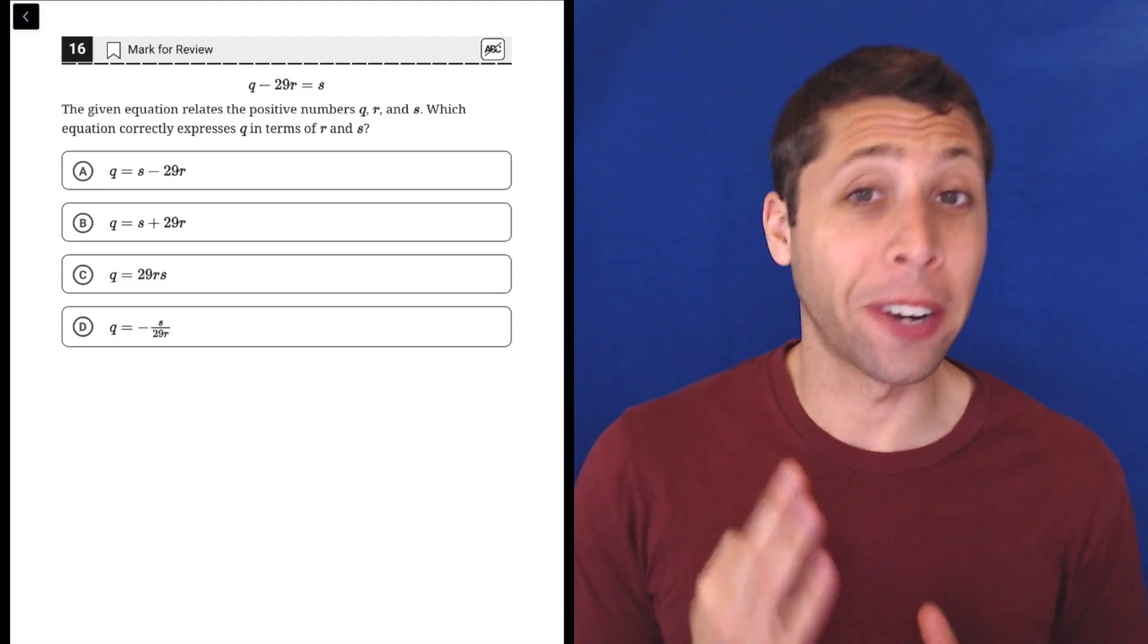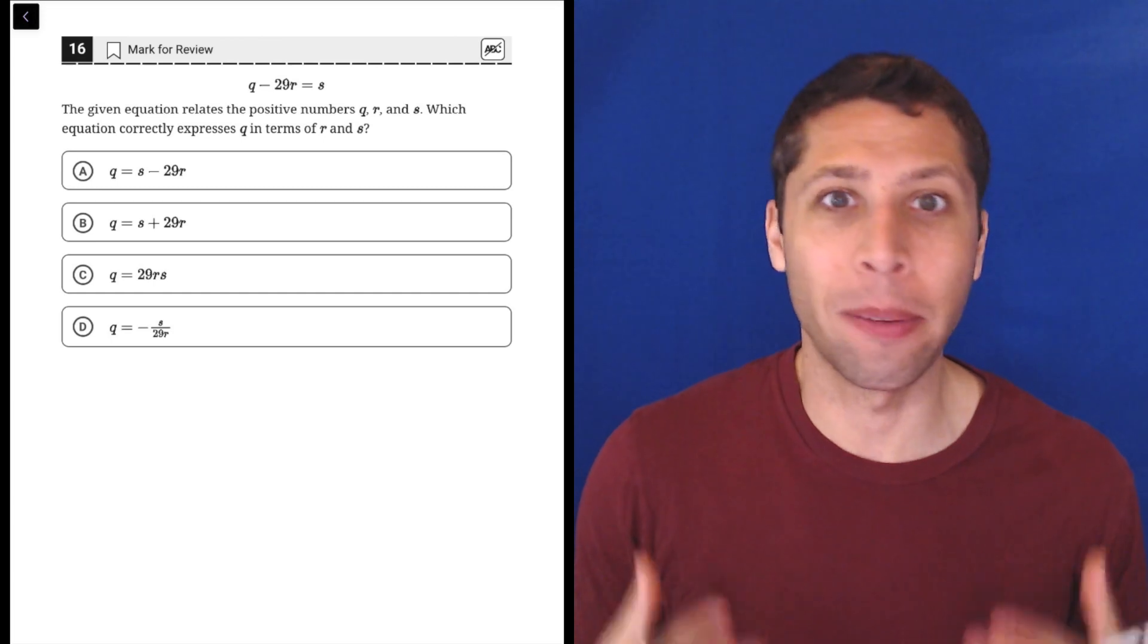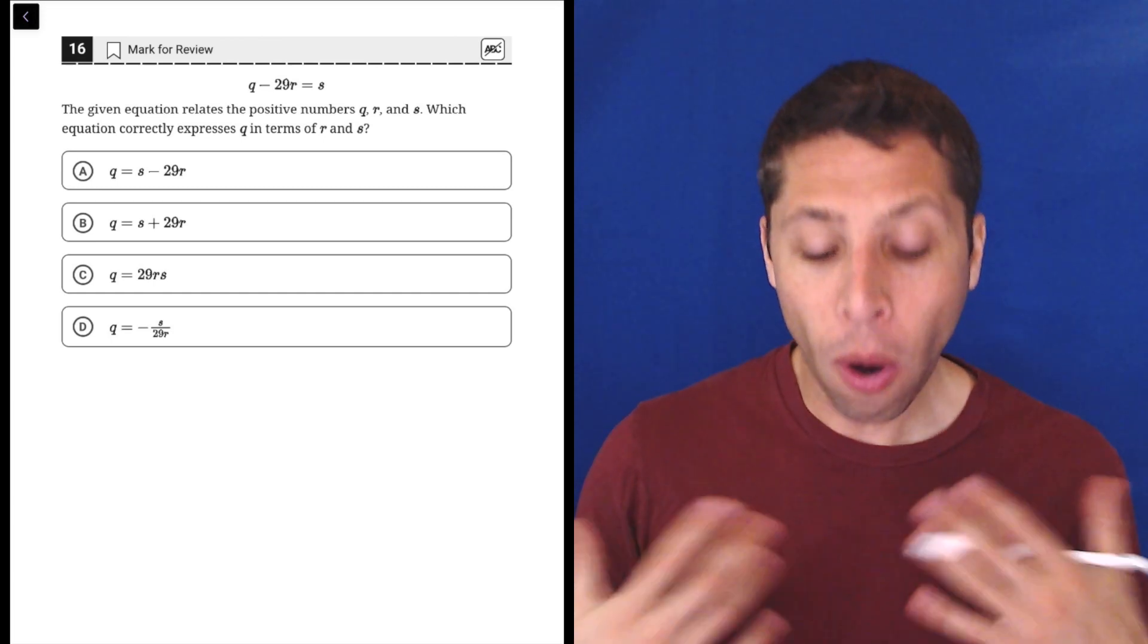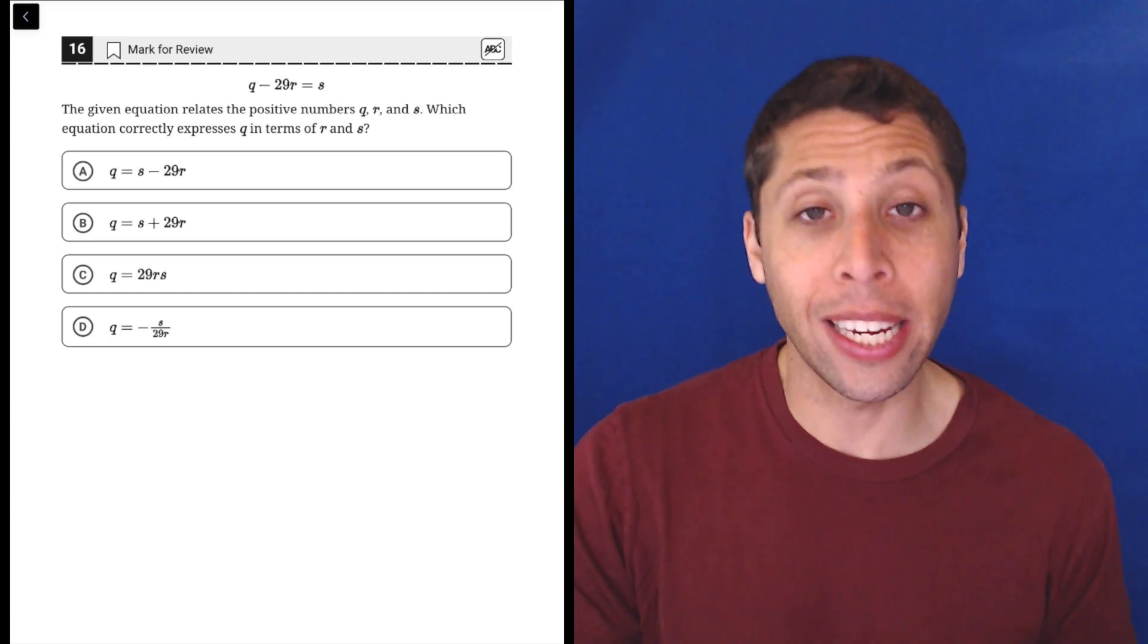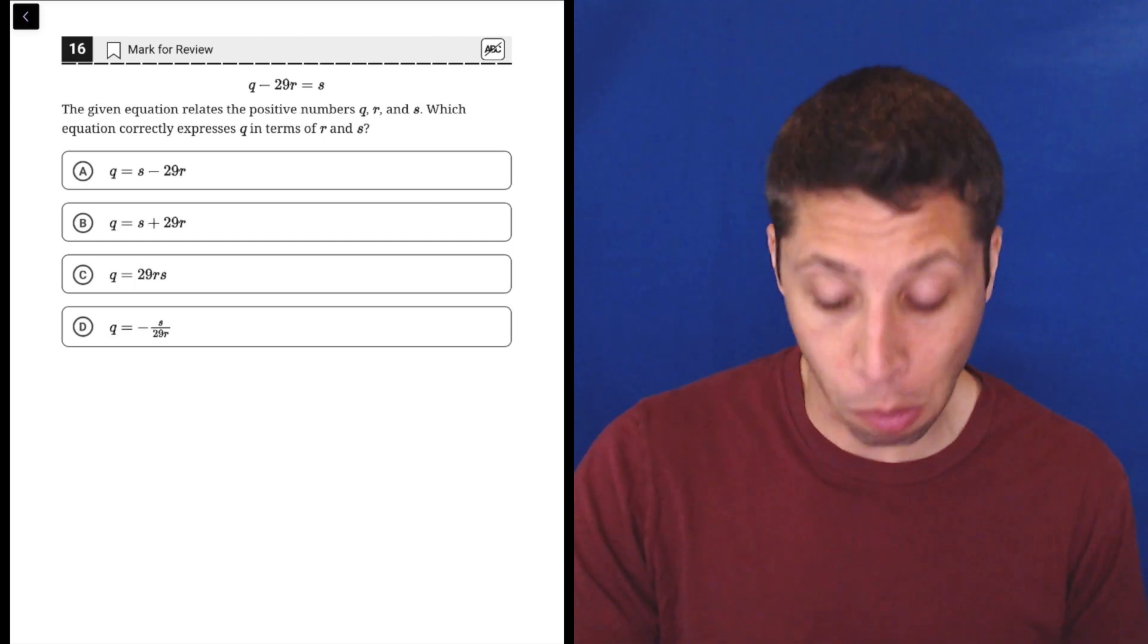These equations have three variables which you might not be working with that much in school yet, and so that may seem scary, but it's really not. All they're asking us to do is rearrange this starting equation so that it looks like one of the bottom ones, and luckily they make it really clear what we need to do.